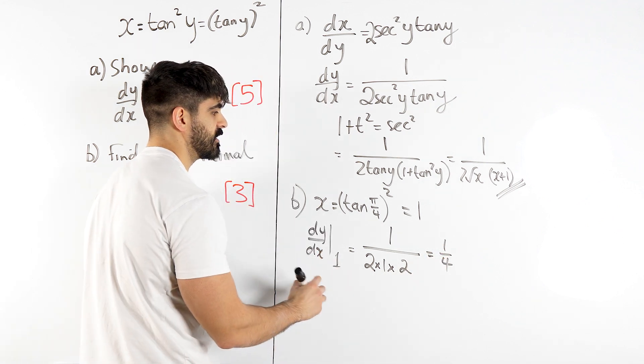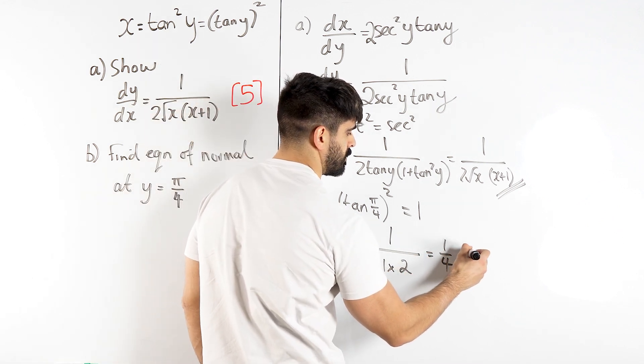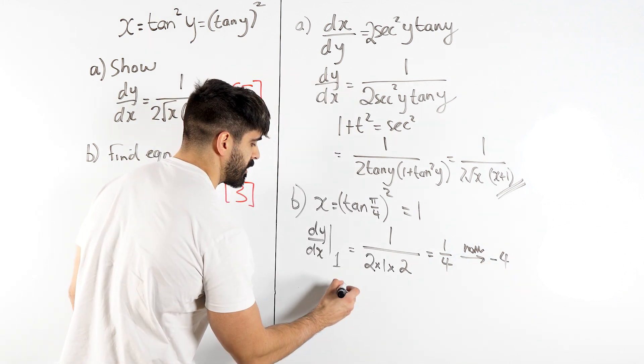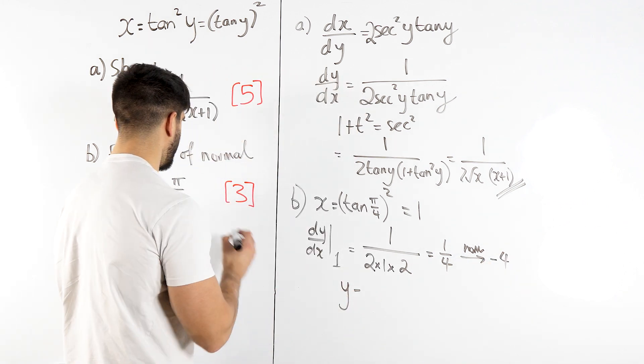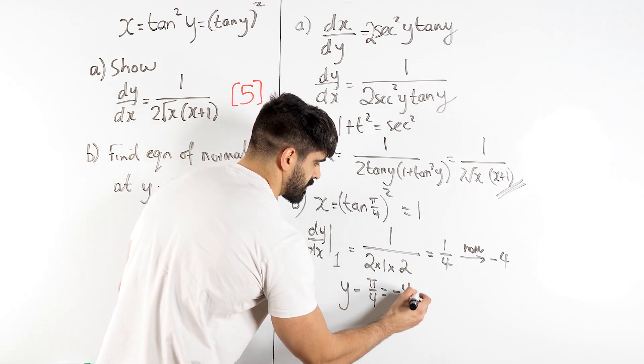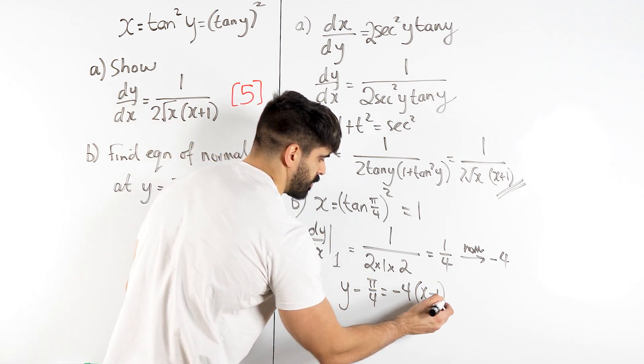But that's the gradient. So the normal will be the negative reciprocal minus 4, so that's the gradient. Now we're going to do y minus y1, the y1 is pi over 4, is the gradient minus 4, x minus x1.